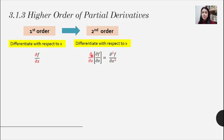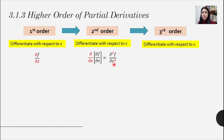You can rewrite it using the compact notation. You can see there are two ∂ symbols, so you write ∂² at the top — the 2 is placed between the symbol ∂ and f. At the bottom you have ∂x·∂x, which you can rewrite as ∂x², where the 2 comes after the variable x.